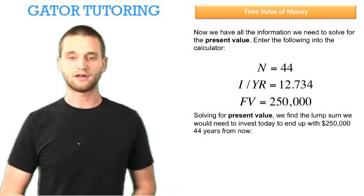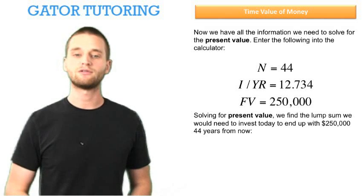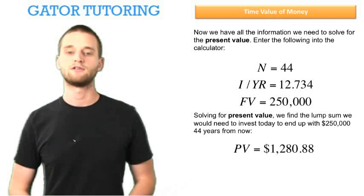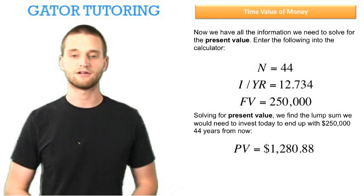Solving for the present value, we found the lump sum we would need to invest today to end up with $250,000 44 years from now to be $1,280.88.